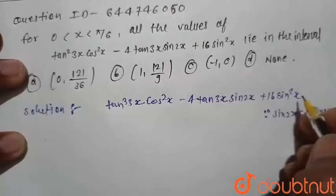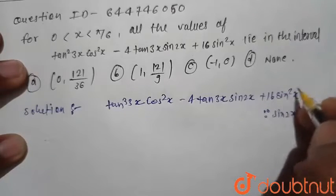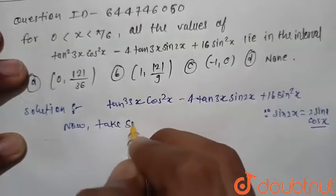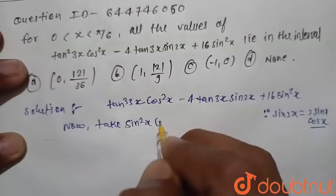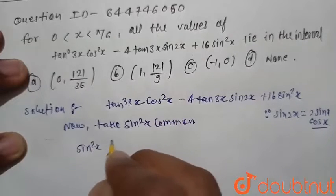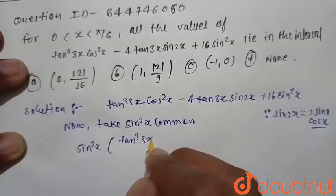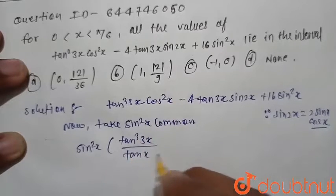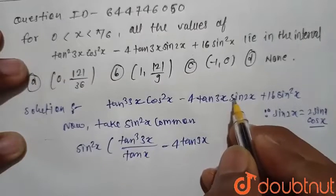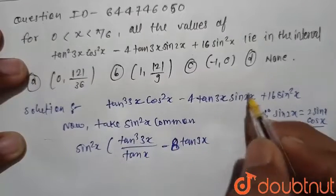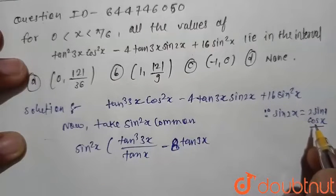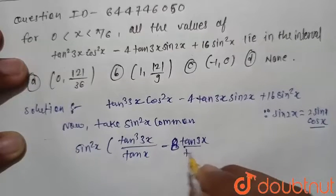We rewrite sin(2x) as 2·sin(x)·cos(x). We take sin²x common from the expression. After factoring, we get sin²x into [tan³(3x) divided by tan(x)] minus 4·[tan(3x) divided by tan(x)] plus 8. Here sin(2x) equals 2·sin(x)·cos(x), so the 4 becomes 8, and cos(x) divided by sin(x) equals cot(x) simplifying with tan(x).